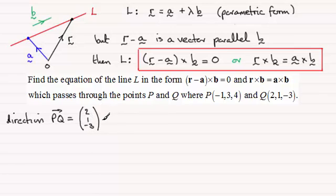And then we subtract O to P, which is the vector minus 1, 3, 4. And working that out we get the vector 3, minus 2, minus 7. So that's our direction vector.